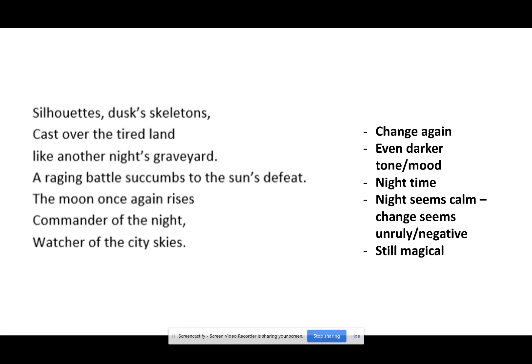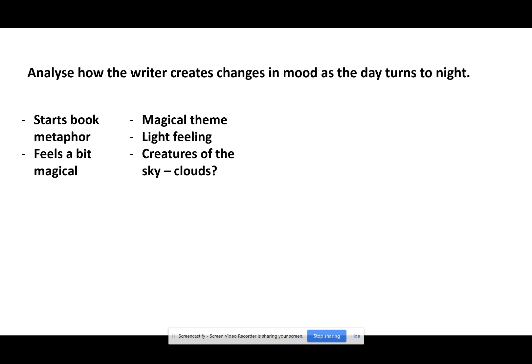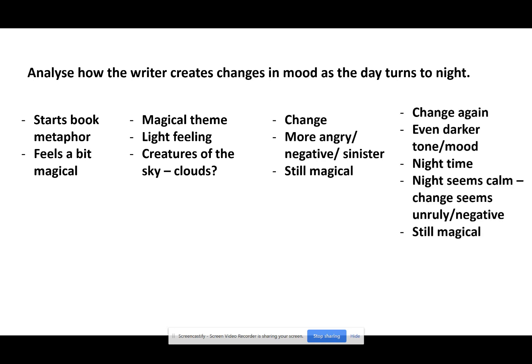So we've thought about that. Have a think about the poem — maybe go back and read it one more time. I'll show you the question and how this builds. 'Analyze how the writer creates changes in mood as the day turns to night.' All I've done is copy across the parts I wrote down: it starts feeling magical, a book metaphor; goes magical and light; then changes — seems a bit more sinister; then changes — seems a bit darker, but then kind of calm and still magical. By going through and breaking that text down, I've been able to see how the mood changes.